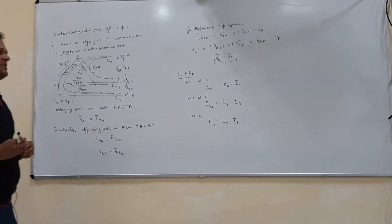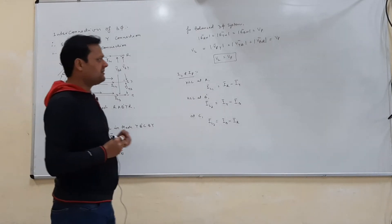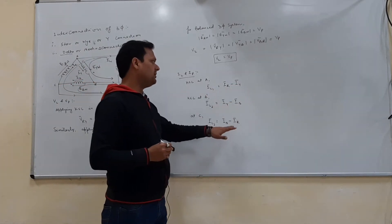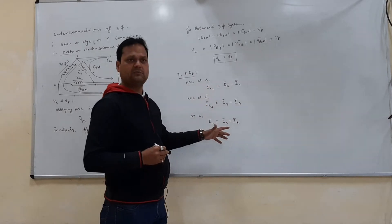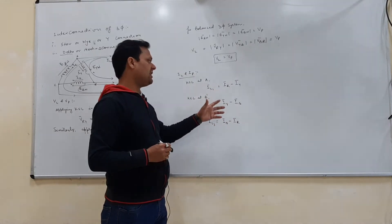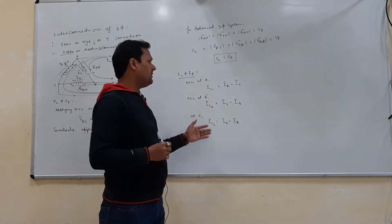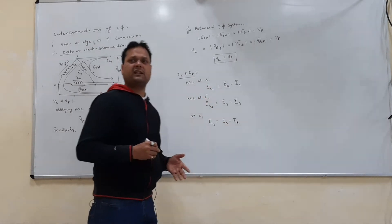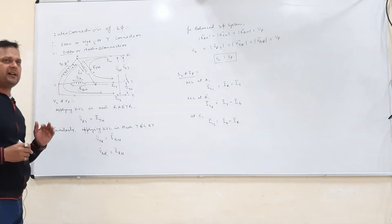Since we have to perform the subtraction of two AC quantities — IR, IY, and IB — we need to draw a phasor diagram. Based on those expressions, we will find the phasor diagrams of IL1, IL2, and IL3.